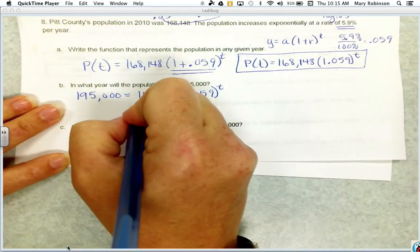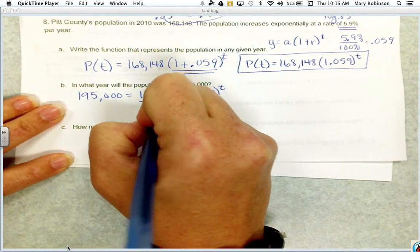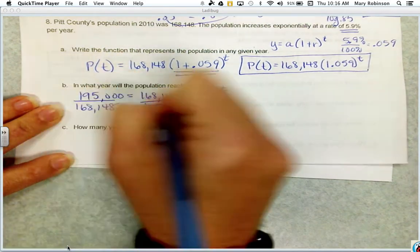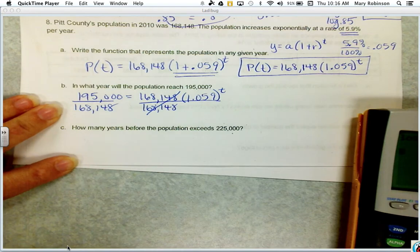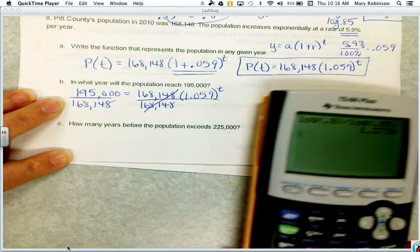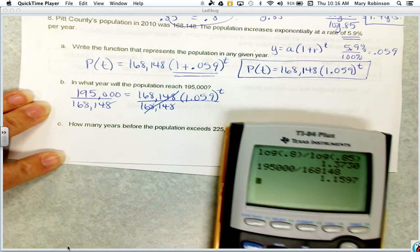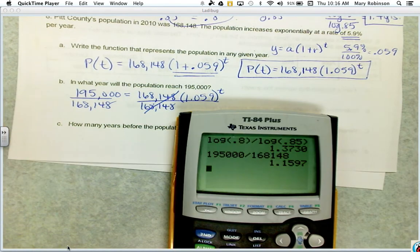To solve this, we're going to need to divide out by A. And then we'll end up doing the same thing we did with 7B and C. So we have 195,000 divided by 168,148.